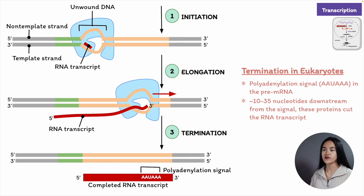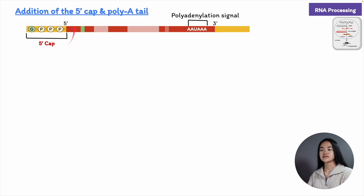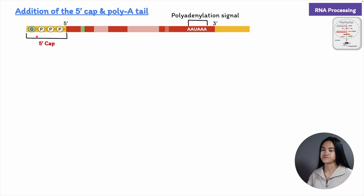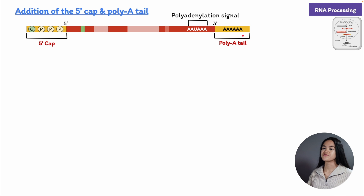During RNA processing, enzymes modify the two ends of the pre-mRNA molecule. First is RNA capping, which modifies the 5' end of the RNA transcript — the part that is synthesized first. The RNA cap includes a guanine nucleotide with a methyl group attached to the 5' end. The second modification is called polyadenylation. After the polyadenylation signal is transcribed and the pre-mRNA is cut and released, an enzyme adds 50 to 250 adenine nucleotides at the 3' end, forming a poly-A tail.